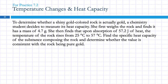There's a lot of words in this problem. To determine whether a shiny gold-colored rock is actually gold, a chemistry student decides to measure its heat capacity. She first weighs the rock and finds it has a mass of 4.7 grams. She then finds that upon absorption of 57.2 joules of heat, the temperature of the rock rises from 25 degrees Celsius to 57 degrees Celsius. Find the specific heat capacity of the substance composing the rock and determine whether the value is consistent with the rock being pure gold.